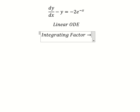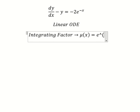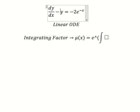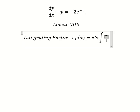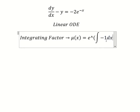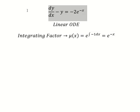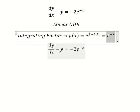We need to find mu of x, which equals e to the power of the integral. We can see that negative one next to y is for the integrating factor, and I will put this in here. So we have negative x, which means we multiply both sides by this integrating factor.